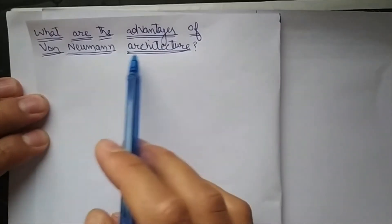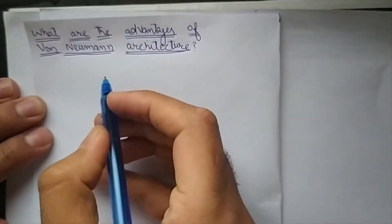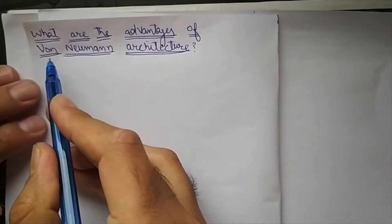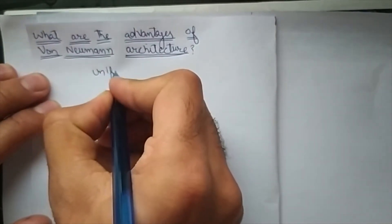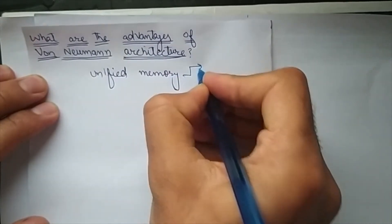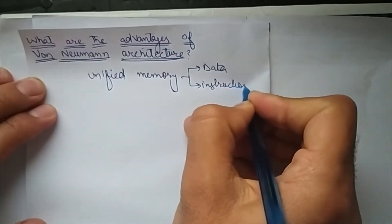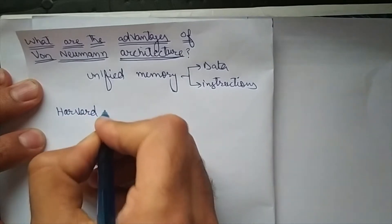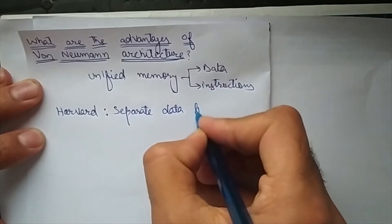What are the advantages of von Neumann architecture compared to Harvard architecture? In general, when we speak about these architectures, von Neumann architecture is an architecture where we have a unified memory — unified memory for both data and instructions — whereas in Harvard architecture we have separate data and instruction memories.